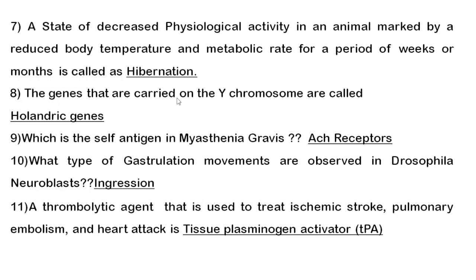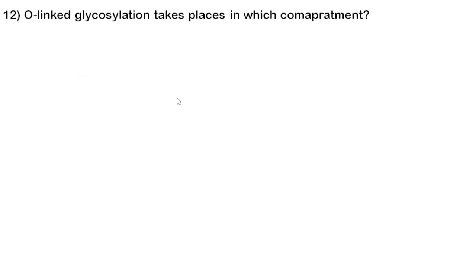Eleventh question: the thrombolytic agent used in treatment of ischemic stroke, pulmonary embolism, and heart attack is tissue plasminogen activator (tPA), which is an rDNA product produced by the company Genentech. Sometimes they ask which company makes a particular rDNA product. Also try to know about leptin and EPO.